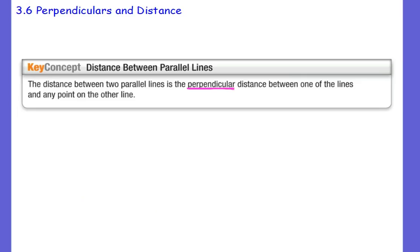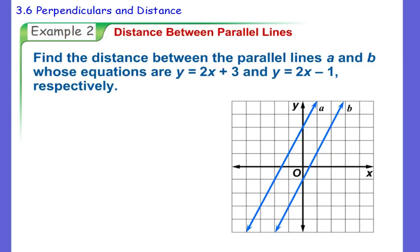So let me show you how to do that. And that's what this key concept says right here. Okay, so first example here, it says find the distance between the parallel lines A and B, whose equations are y = 2x + 3 and y = 2x - 1. So right away, we can tell they're parallel just based on their equations. They have the same slope of 2 and different y-intercepts. And then, of course, they graphed A and B for us here.